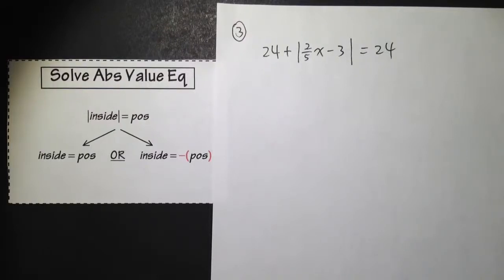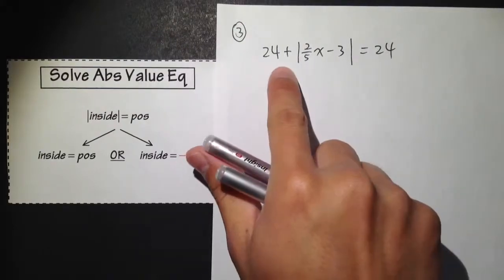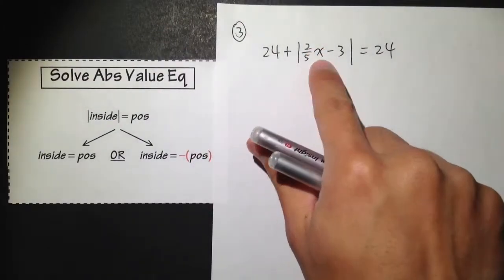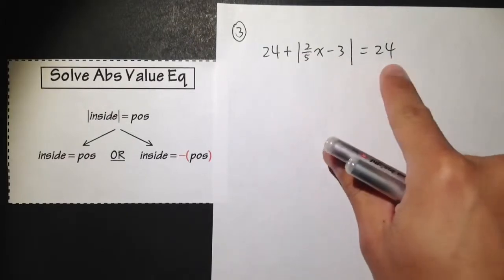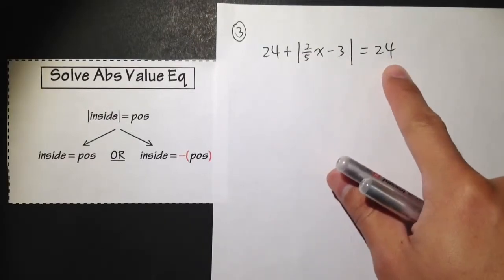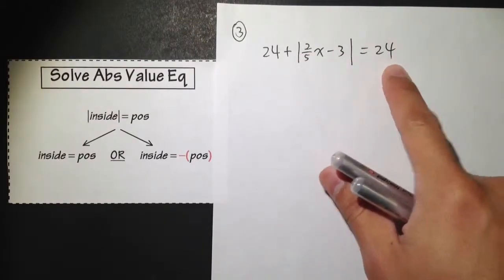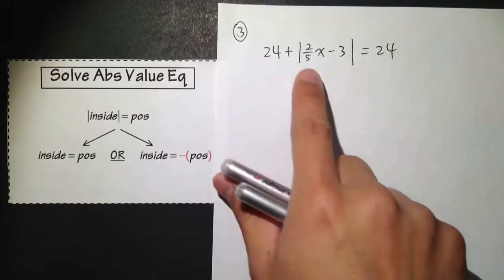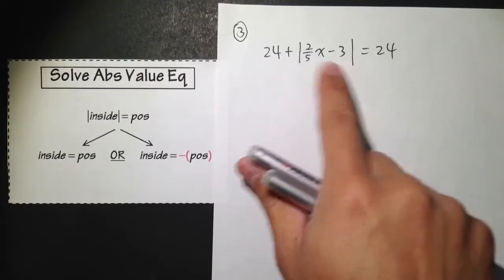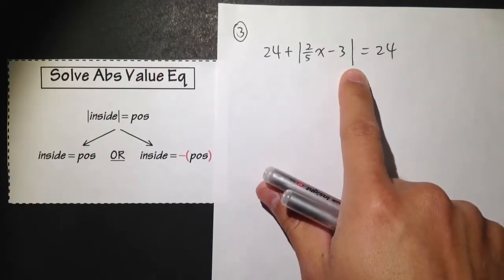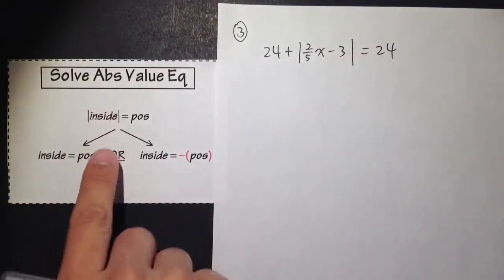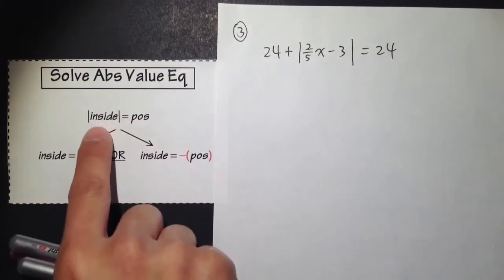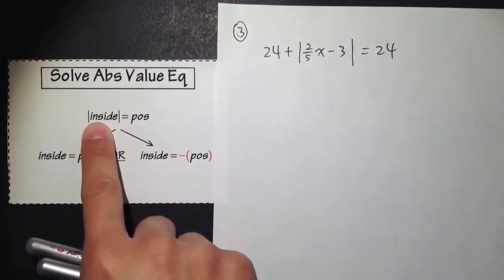Example number 3: 24 plus the absolute value of 2 over 5x minus 3 is equal to 24. Whenever we are solving absolute value equations, we need to make sure we can isolate the absolute value first, because this procedure only works when you have the absolute value by itself on the left-hand side.